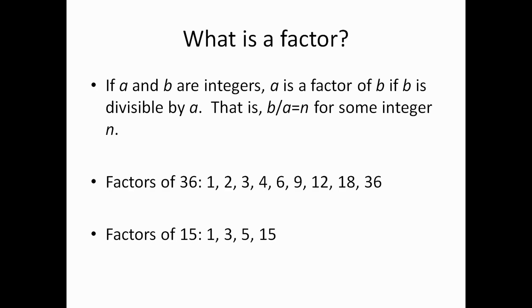So, all of these factors are coming in pairs. 1 and 36, 2 and 18, 3 and 12, 4 and 9. But, 6 is not paired with anything because 6 goes with 6. 6 times 6 is 36. 36 divided by 6 is 6. So, it's kind of paired with itself. But, we don't count that as a separate factor. So, generally, if a number is a perfect square, it'll have an odd number of factors. If a number is not a perfect square, it'll have an even number of factors.